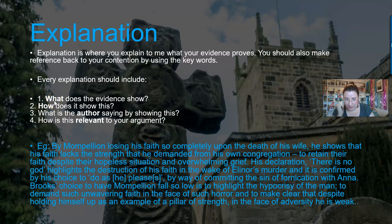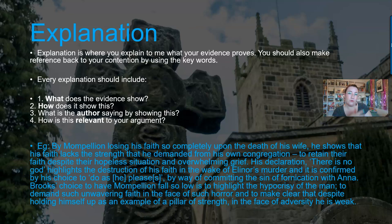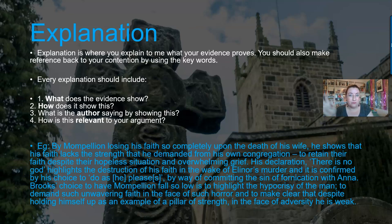The first question is: what does the evidence show? How does the evidence show this? What is the author saying by showing this? How is this relevant to your argument? What, How, Author, Relevant. You use those four questions to spur on your explanation, to make sure you're not just writing flippant one-sentence explanations, but that you try to answer each one of these questions. Sometimes you don't need all four — use WHAR as a prompt to check: have I given enough depth?